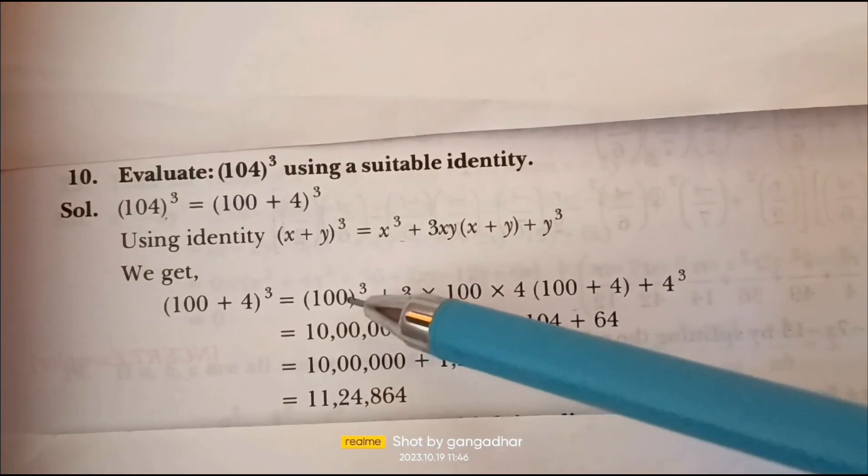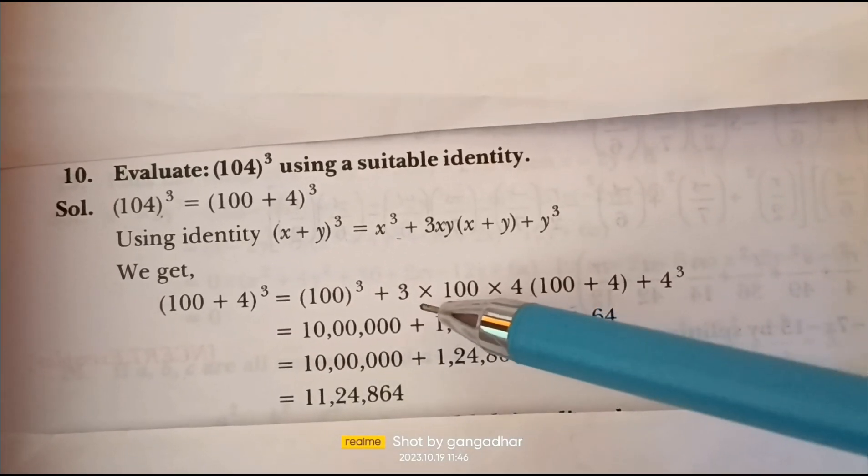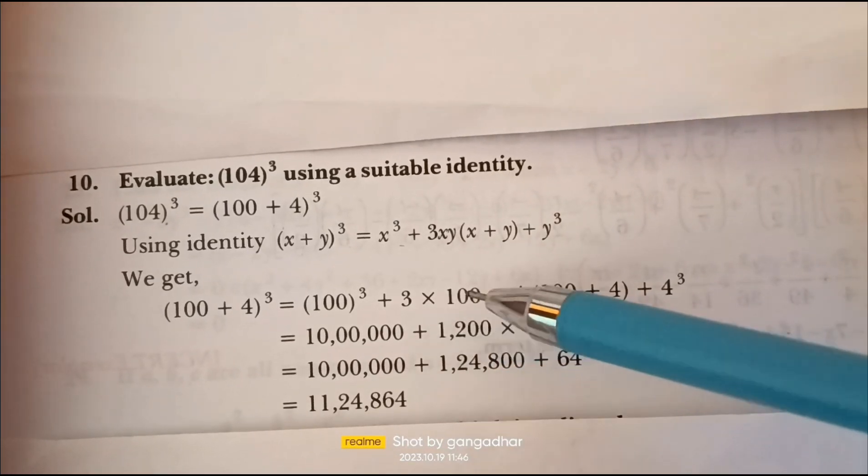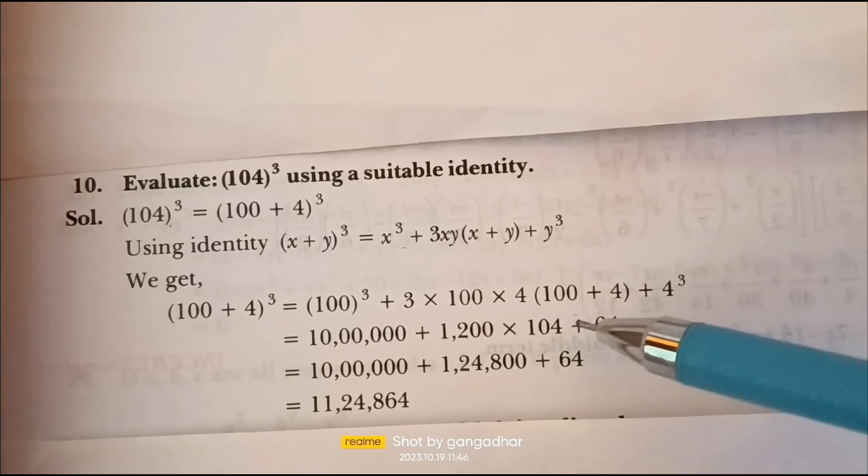100³ equals 10 lakh, or 1,000,000. 3 × 100 × 4 equals 1,200, which we multiply by 100 + 4, giving us 104.